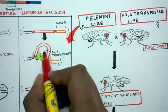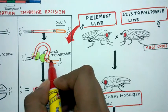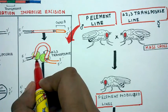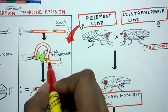You can see this delta 2,3 transposase, which is represented as green, would actually cut this red transposon and it would help it to jump.